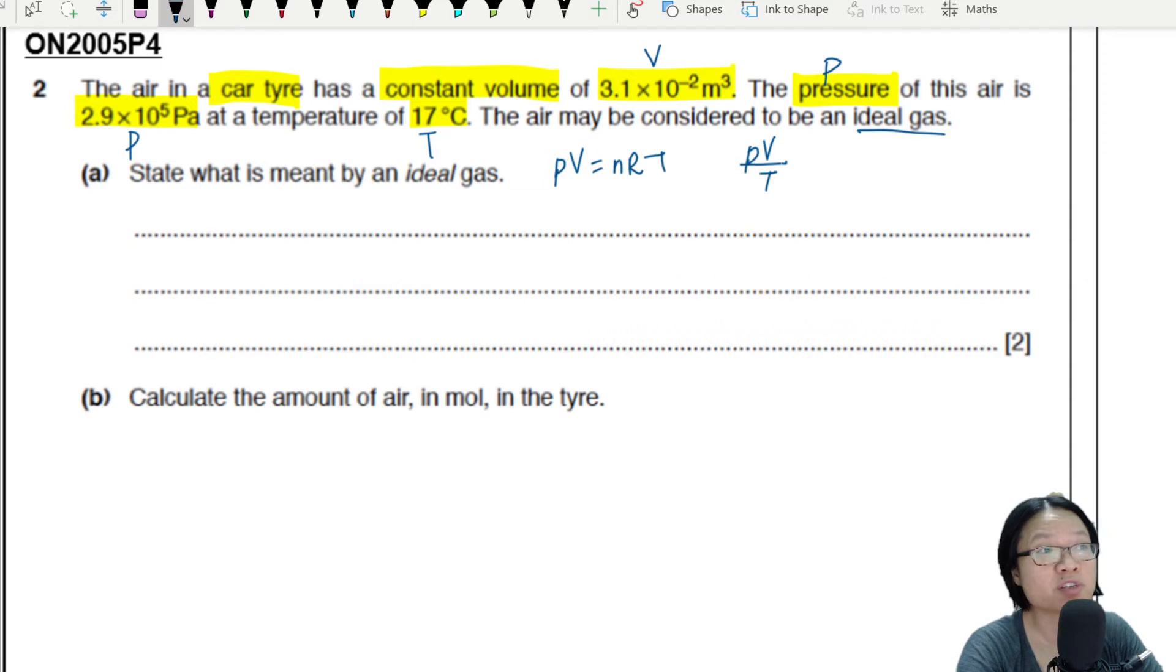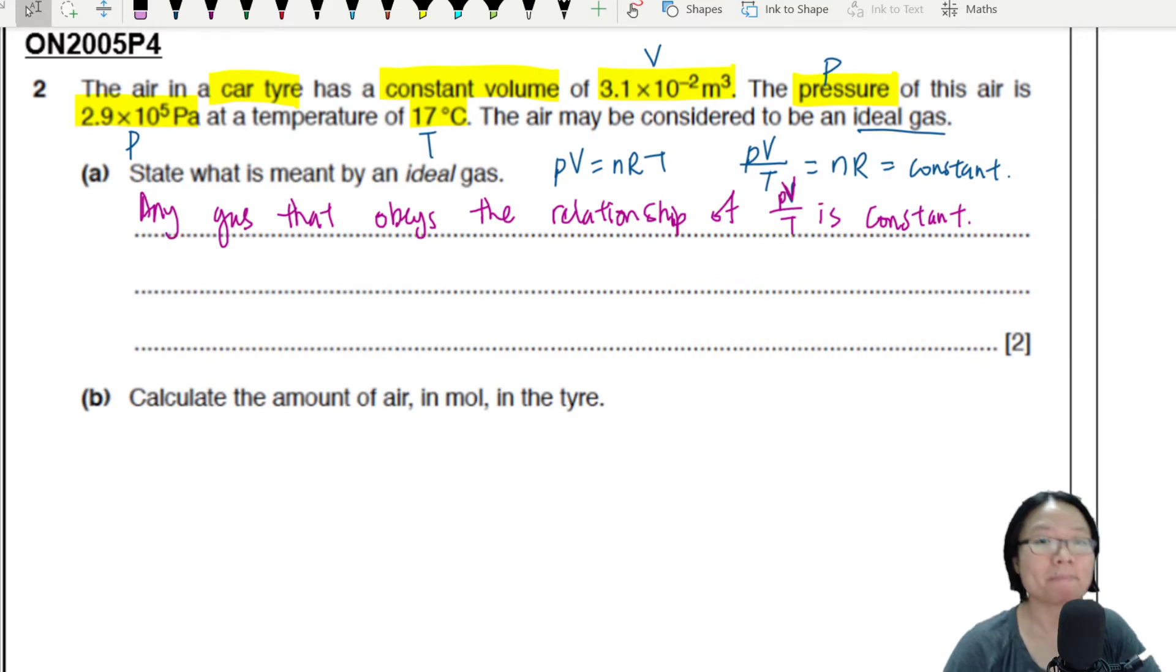So we should use PV over T is equal to nR which is constant. So the first sentence I'm going to write is: any gas that obeys the relationship PV over T is constant. So there is one mark.